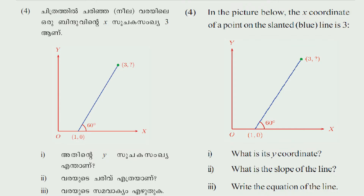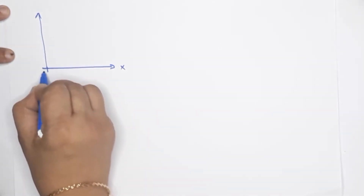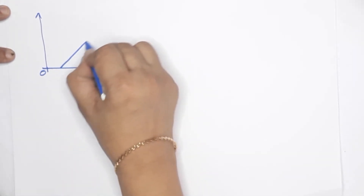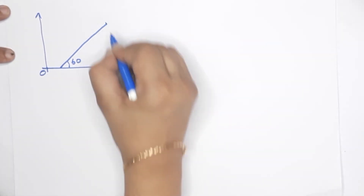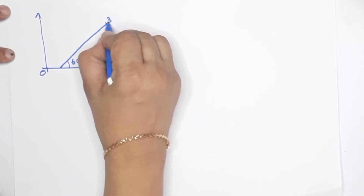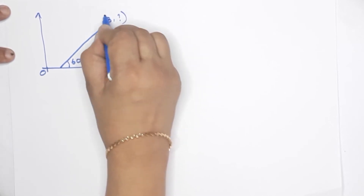Fourth question. In the picture below, the x-coordinate of a point on the slanted line is 3. The y-coordinate is not given. First question: what is its y-coordinate? Second question: what is the slope of the line? Third question: write the equation of the line. We have one x-axis and y-axis, with an origin meeting point. Here is a slanted line at 60 degrees. Here is a point: (3, ?).